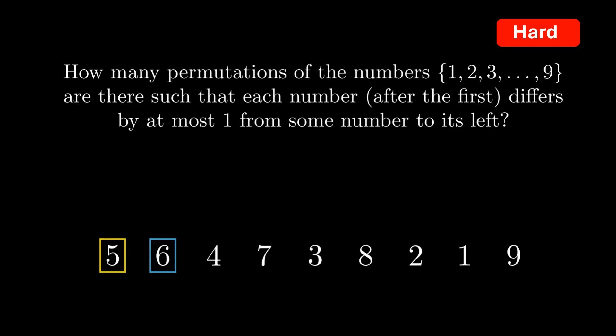For 6, we have 5 to the left that differs by 1. For 4, we have 5 to the left with a difference of 1. Similarly, for 7, there is 6 to the left, and the same holds true for all subsequent numbers. Note that the number with a difference of 1 does not need to be immediately to the left. It should just be somewhere earlier in the sequence. So how many such permutations are there? Pause the video here if you want to give it a try.